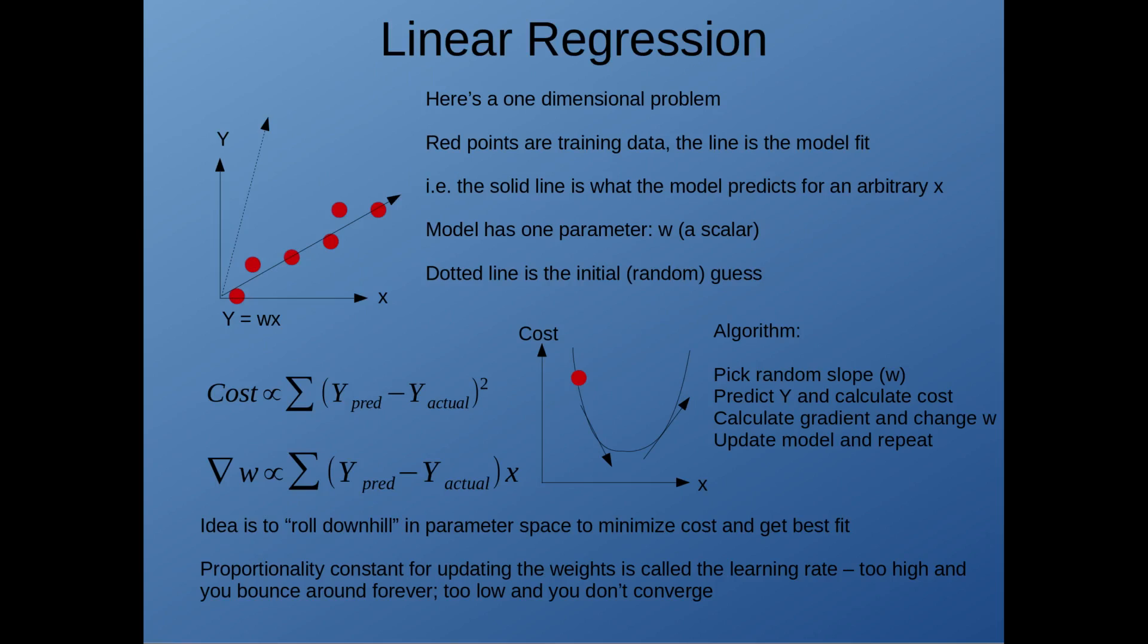One of the simplest cases is linear regression. Here on the top left, I have shown a one dimensional problem, which is simply a y equals wx situation. The red points are our training data, and the solid line is the model fit. In other words, that is what the model predicts for some arbitrary x. This has only one parameter, w, and in this case, it is a scalar. For clarity, I've shown a dotted line, which is just our initial random guess.